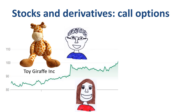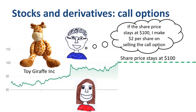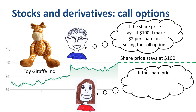If the share price stays at $100 until the expiration date, then Jane will not exercise her call option, as she has the right but not the obligation to do so. In this scenario, John makes $2 per share on selling the call option to Jane, and Jane loses $2 per share by having bought an option that she is not using.